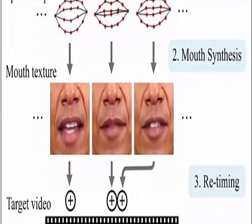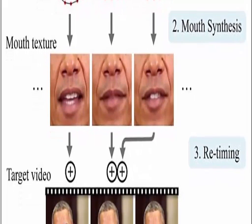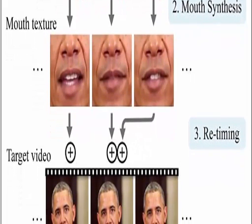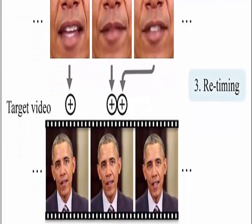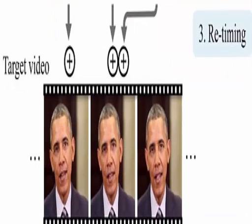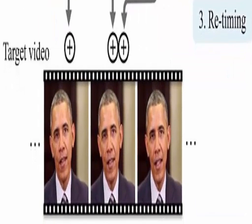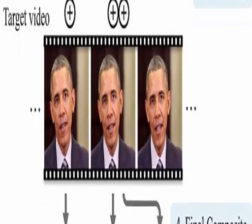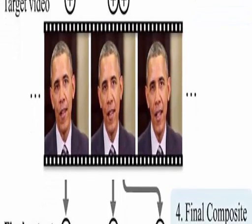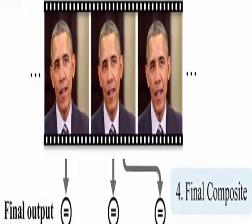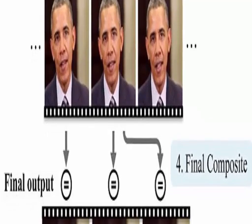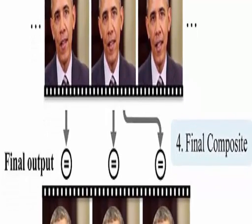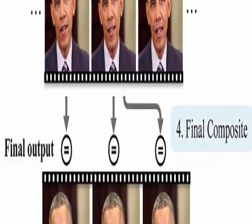Instead of creating a video directly from audio, the research team carried out two steps. The first step involved training a neural network to watch videos of a person and translate different sounds into basic mouth shapes. Then, by building on research from UW's Graphics and Image Laboratory team with a new mouth synthesis technique, the researchers were able to superimpose and blend realistic mouth shapes and textures on an existing video of that person. Another important aspect of the technique was to allow a small time shift so that the neural network can anticipate what the speaker is going to say next.